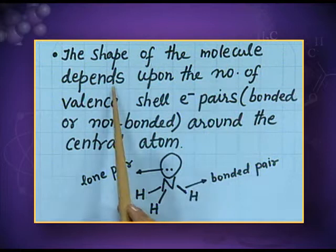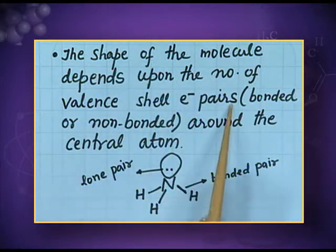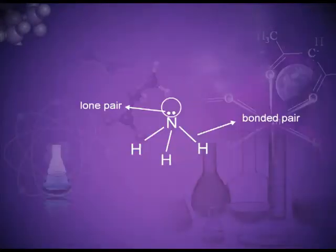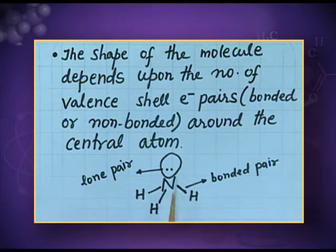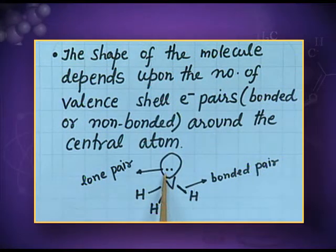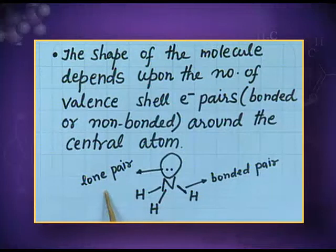The shape of the molecule depends upon the number of valence shell electron pairs. Electron pairs can be bonded or non-bonded around the central atom. In the case of ammonia, the bond between N and H is known as the bonded pair, but there is an electron pair on the nitrogen that is not participating in any bond formation — this is known as the lone pair.